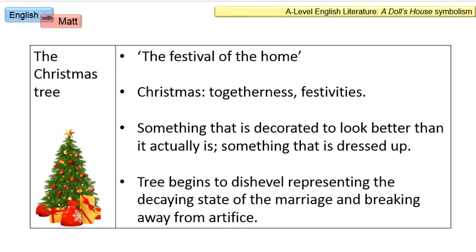As the play progresses, we're told that the Christmas tree — because it's a real tree — begins to become dishevelled, and it starts to represent metaphorically the decaying state of the marriage between Helmer and Nora, breaking away from artifice. No matter how lavishly you decorate a tree, it's always going to die eventually, particularly if it's real. Even a plastic tree has to come down in January, so it only looks good for so long.